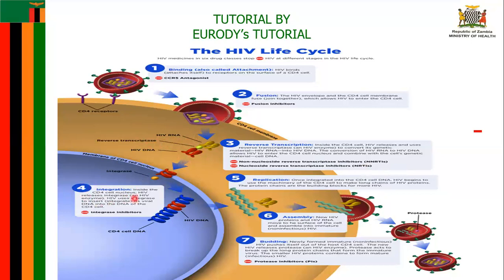Stage four is called the integration stage. Inside the CD4 cell nucleus, the HIV releases the integrase enzyme — an HIV enzyme — and uses it to insert its viral DNA into the DNA of the CD4 cells. So the CD4 cell DNA and the HIV DNA combine together, which is called integration.